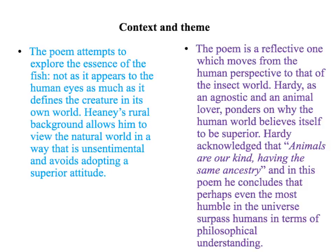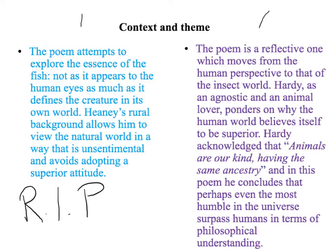Every single one of your flirt grids starts off with a bit of information on context and theme. Once you have completed your introduction - and remember, your introduction is a really important thing, because what it has to do is reflect the question. For example, it could be that you think Hardy sees the natural world too often through human eyes, whereas Heaney sees the natural world through the eyes and experience of the animals themselves. So you've got your argument, and then you have to present an overview of what these two poems are about, or maybe something about the two poets.